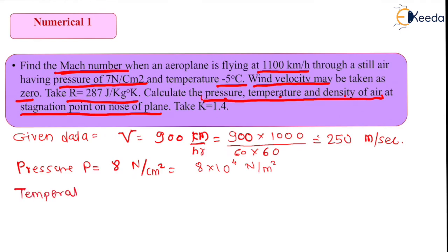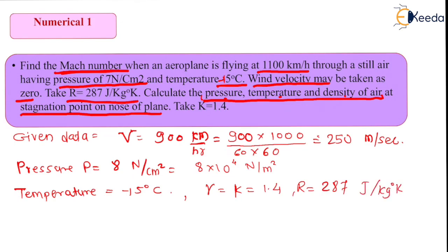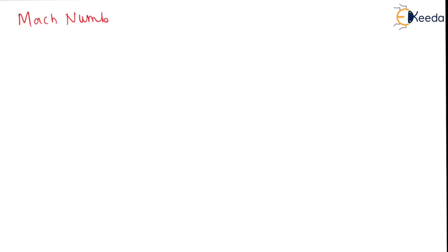Temperature is minus 15 degrees centigrade. Gamma value, that is K value, equals 1.4. The basic formula for Mach number is M equal to V upon C.